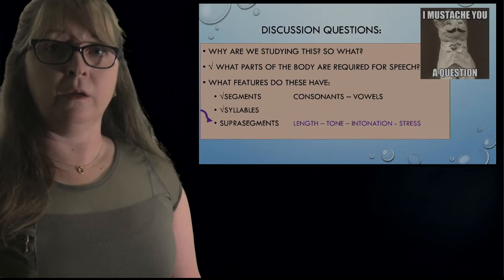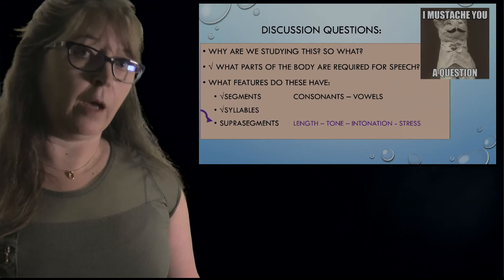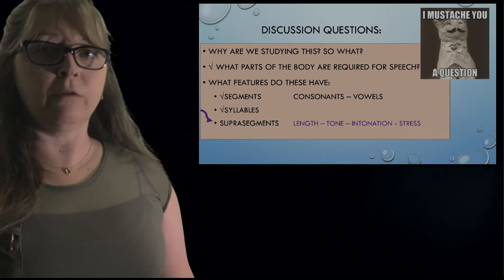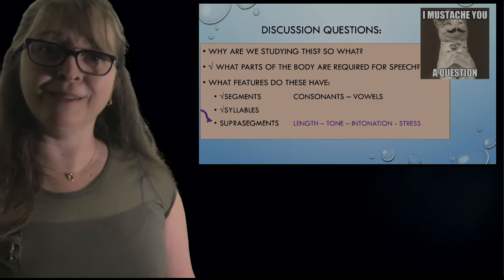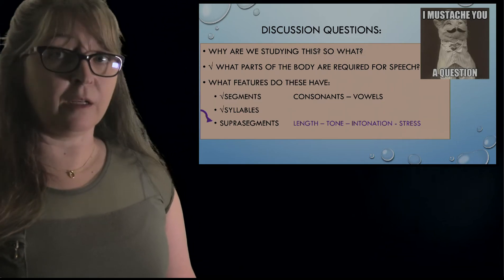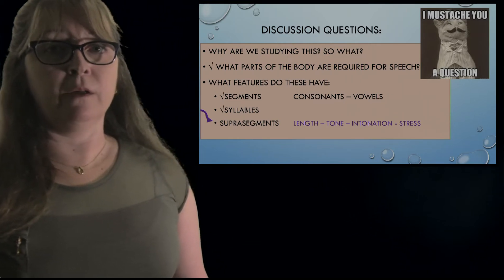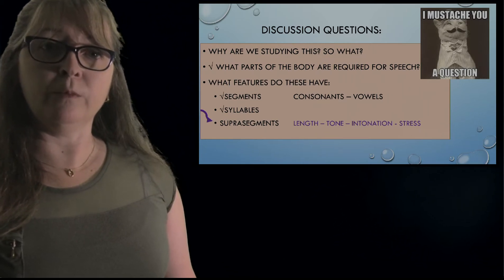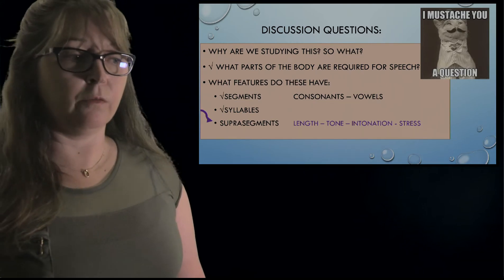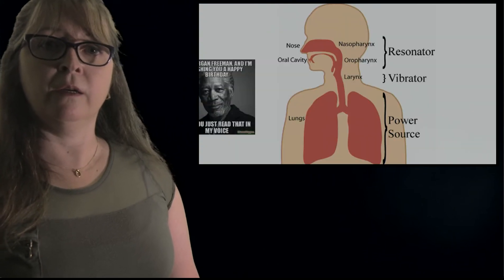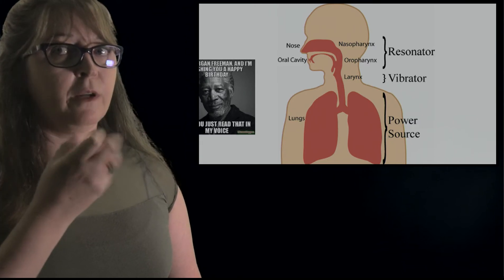Here are our questions: why are we studying this? We'll recap at the end. What parts of the body are required for speech — we did that. What features do segments have — consonants and vowels that become syllables. And now we're going to talk about supersegments: length, tone, intonation, and stress. Think about Morgan Freeman's voice — how does he pronounce things?